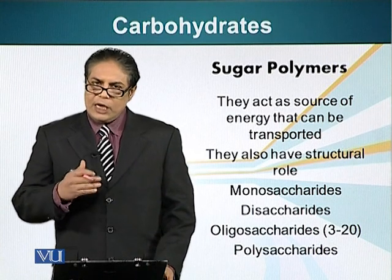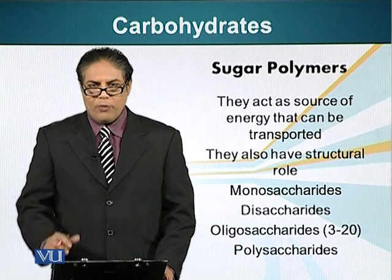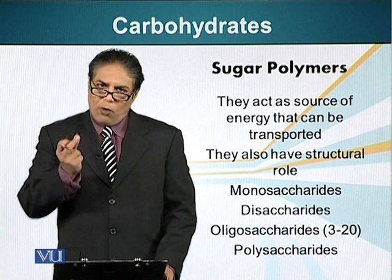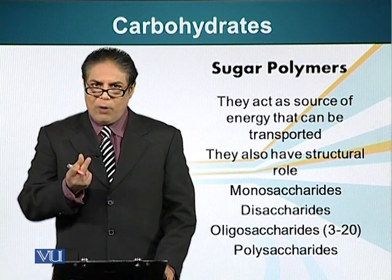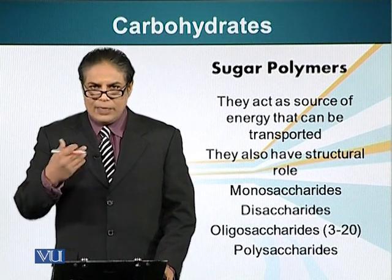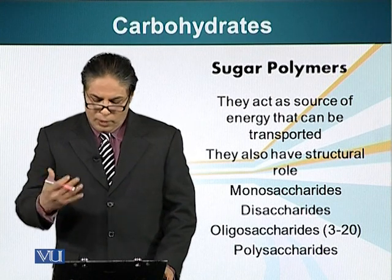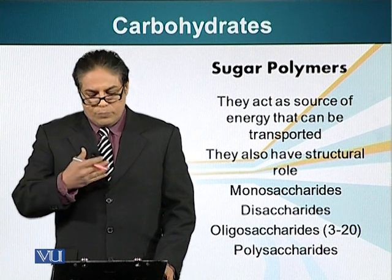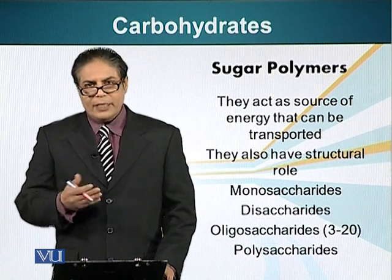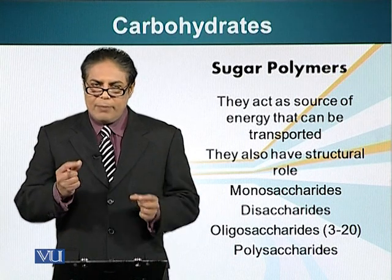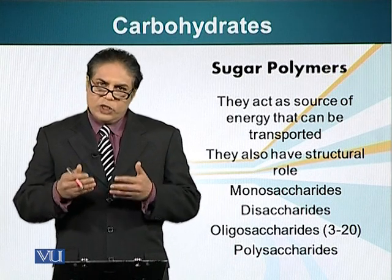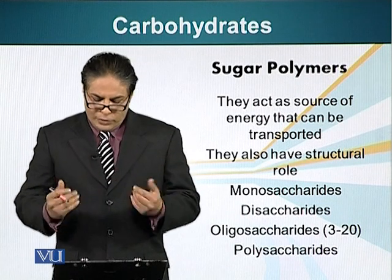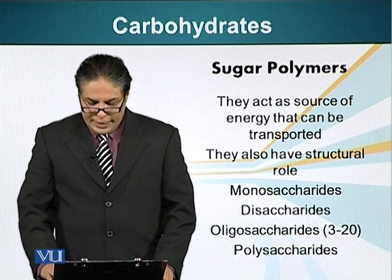Carbohydrates can be classified into four different groups. The monosaccharides, in which the monomer — the basic unit of carbohydrates — exists in its own form. The disaccharides: a simple example of a disaccharide is table sugar, which we use. It is a molecule in which two monomers are linked together and we use that in our daily routine.